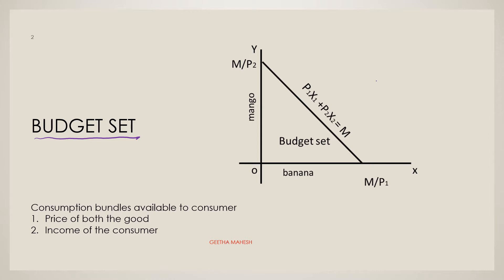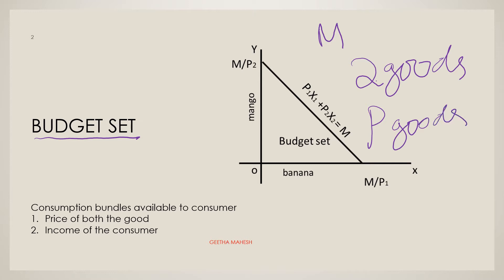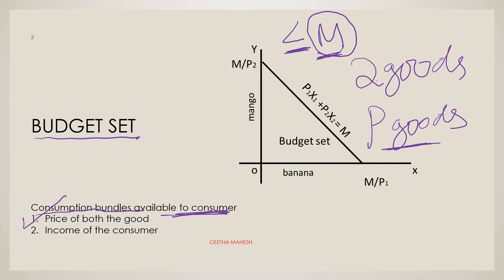Let us assume that a consumer has a fixed amount of income and has to spend on two goods. Let us assume the prices of the two goods are also given. He cannot buy every combination of two goods that he wants to consume. With a given income and the prices of goods, she can buy only those bundles whose cost is less than or equal to income. The consumption bundles available to a consumer depend on two things: the price of both goods and the income of the consumer.